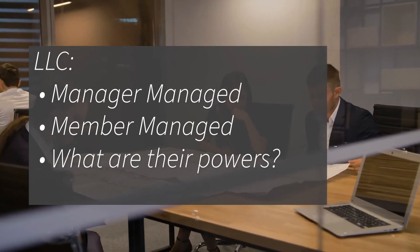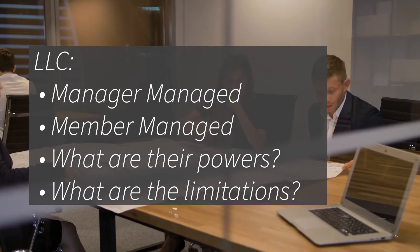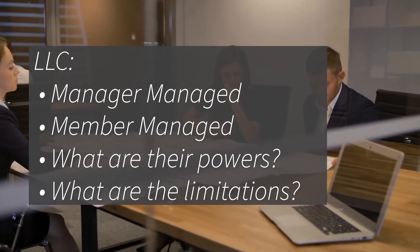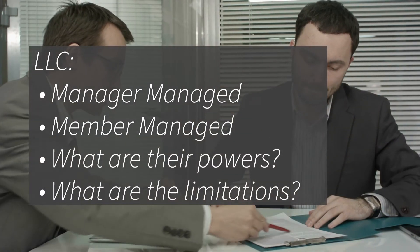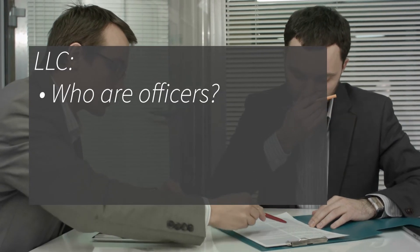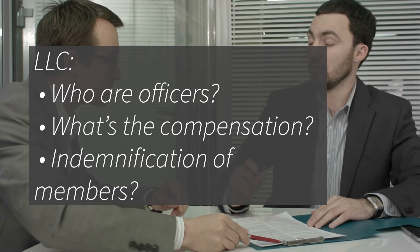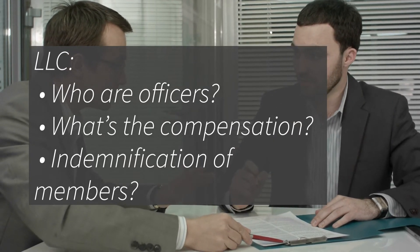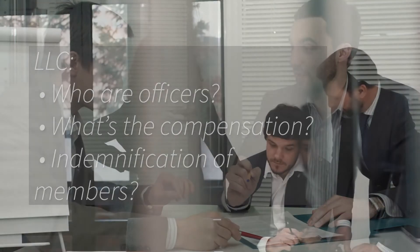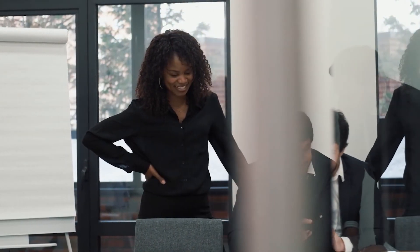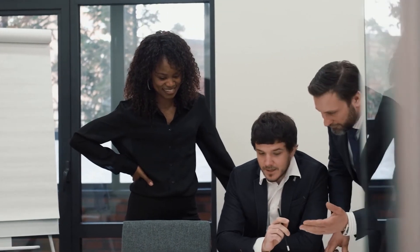What are the authorities and powers of those managing people? What limitations do you want to put on various members? Do you actually set out the authority for the different members? Name who's going to be the officers. What's the compensation? What type of indemnification do the members or managing member get in the event of a lawsuit or some type of liability arising? You can also put into your agreement a limitation of liability for the members.